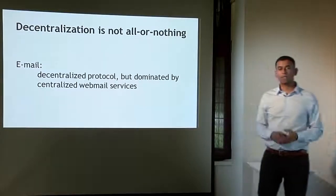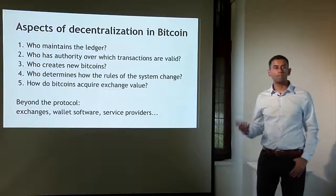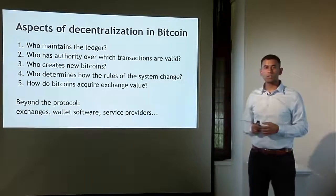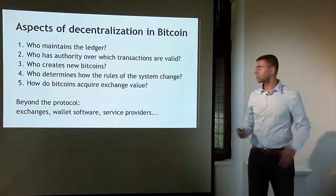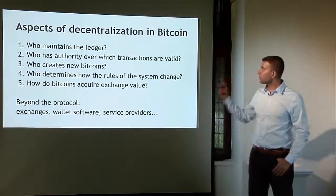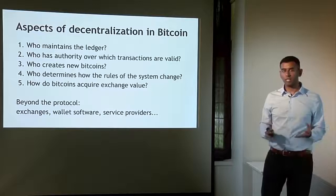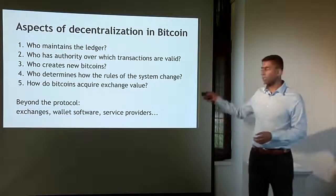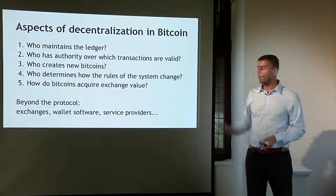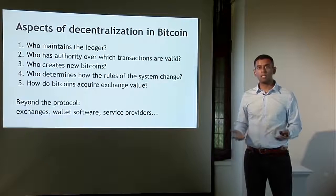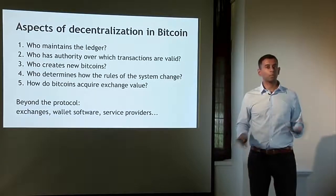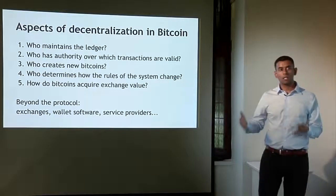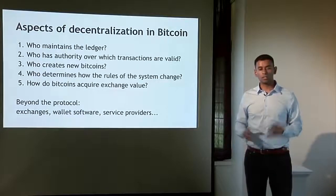Let's delve into the technical aspects of Bitcoin's decentralization. I would break this down into at least five different questions: who maintains this ledger of transactions? Who has authority over which transactions are valid? Who creates new Bitcoins? Who determines how the rules of the system change? And how do Bitcoins acquire exchange value? These are all components of decentralization of the Bitcoin protocol. The first three are the questions we'll consider in this lecture. I want to emphasize that there are aspects to decentralization beyond the protocol — Bitcoin exchanges, wallet software, and other service providers — so even though the underlying protocol is decentralized, these services may be centralized or decentralized to varying degrees.